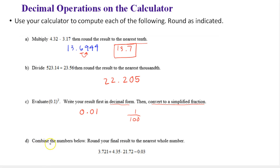And finally, combine the numbers below. Round your final result to the nearest whole number.